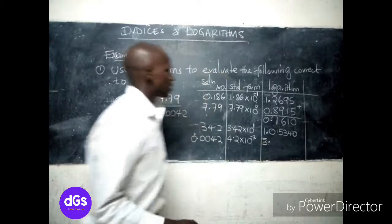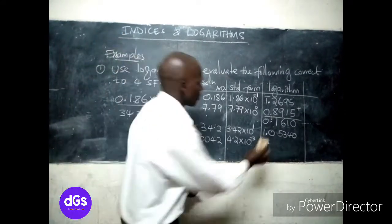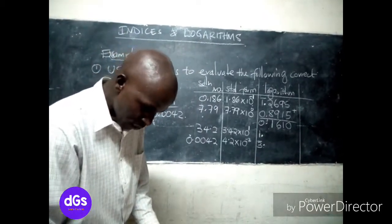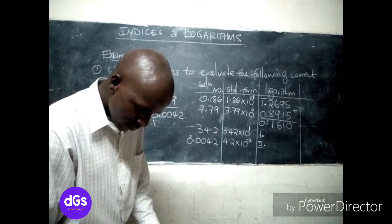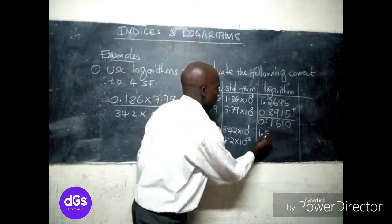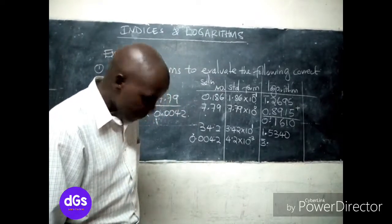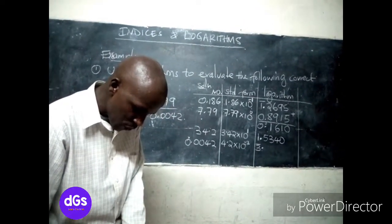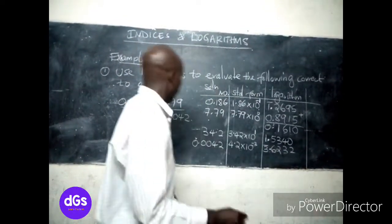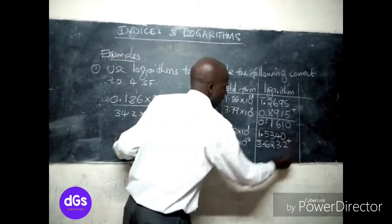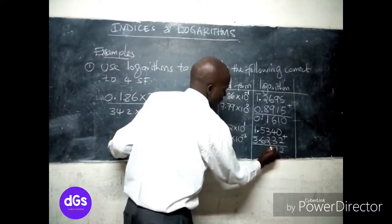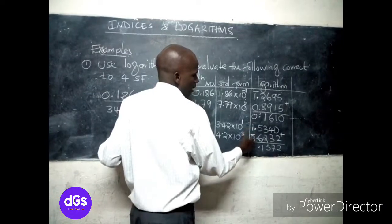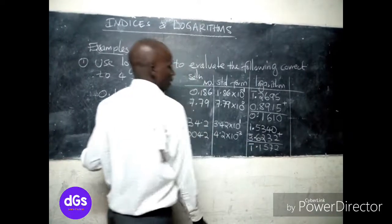Correction: the log of 3.42 should be 1.5340. For 0.0042, we look up 4.20 in the tables and get 0.6232, so the log is bar 3.6232. Since this is multiplication in the denominator, we add these two logarithms: 0.5340 plus bar 3.6232. The mantissa sum gives 1.1572, and the characteristic: 1 plus negative 3 gives bar 2, so the denominator log total is bar 2.1572, but adjusting gives bar 1.1572.